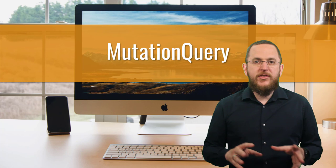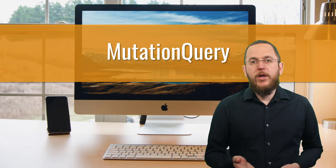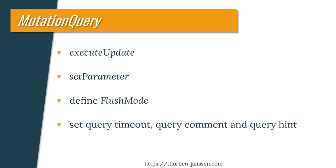There are much fewer things you can define for modifying queries, and that's why the MutationQuery interface benefits the most from the separation. The MutationQuery interface is much cleaner and easier to use than the Query interface by excluding all selection-specific methods. It only defines the executeUpdate method to execute the modifying query, multiple versions of the setParameter method to provide bind parameter values, two methods to define the JPA and the Hibernate-specific flush mode, and a method to set a query timeout, a query comment, and a query hint.